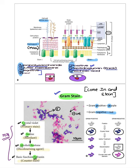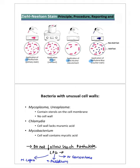Next is the Ziehl-Neelsen stain, also known as the acid-fast stain. The sequence mnemonic is 'CLASS HAS ASKED': C for carbol fuchsin (primary stain), heat is the mordant, acid or alcohol is the decolorizer, and M for methylene blue is the counterstain.